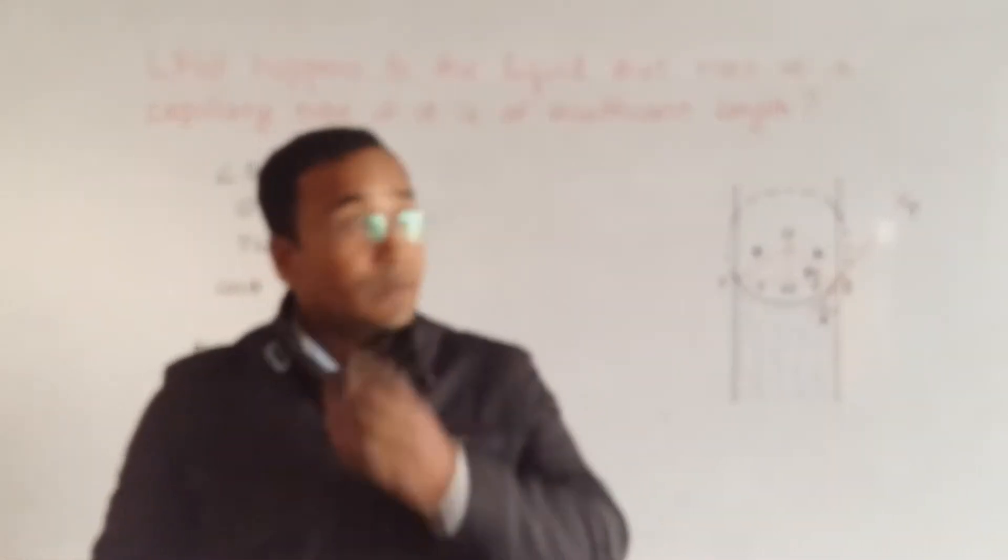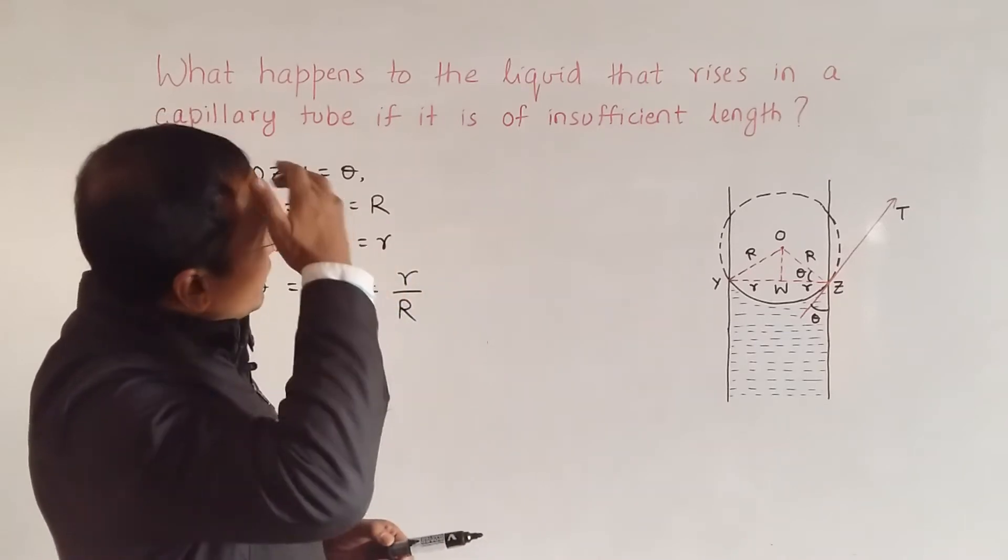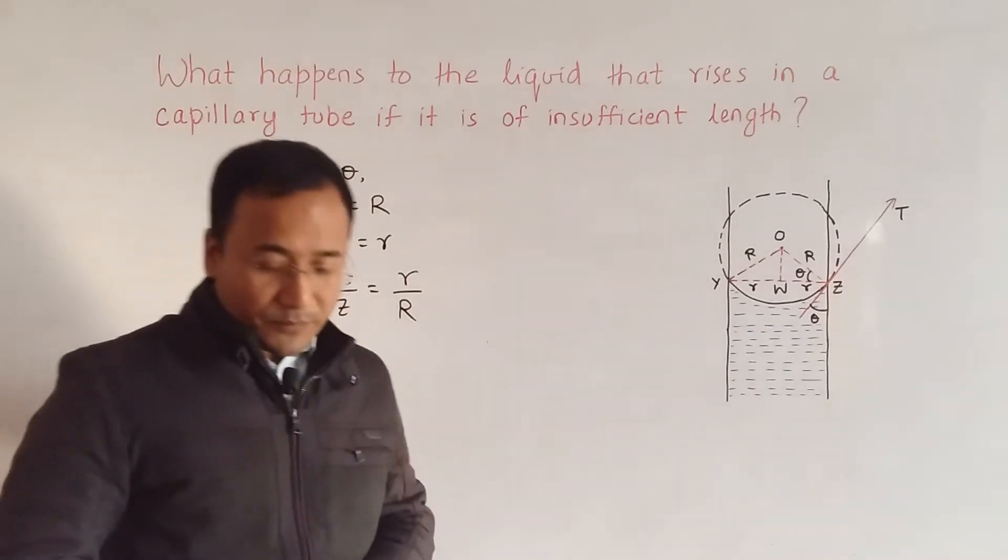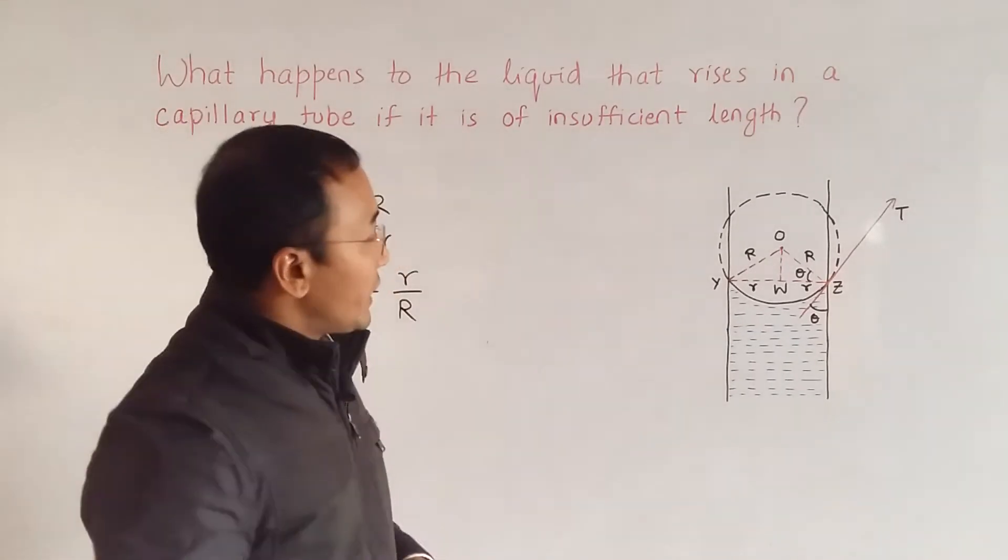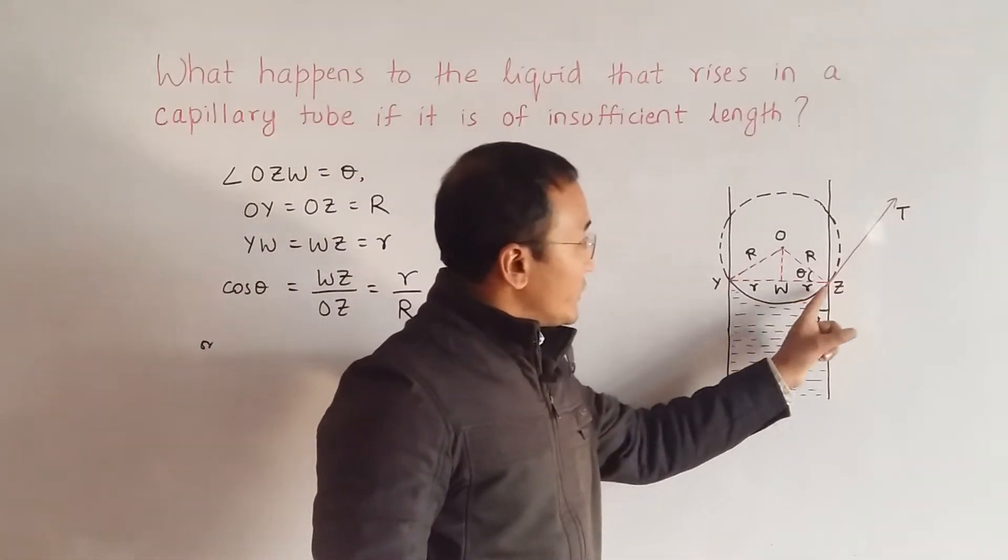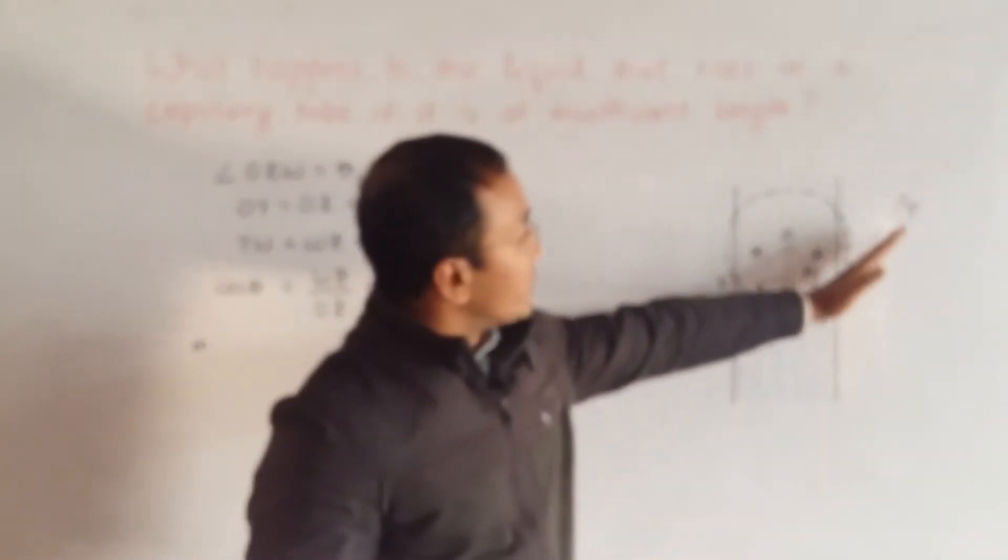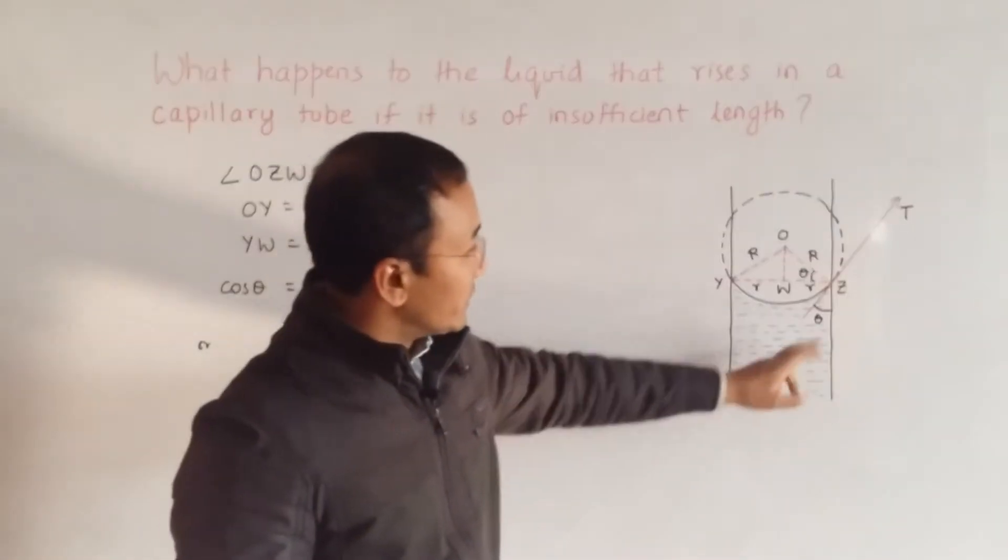The question for today is what happens to the liquid that rises in a capillary tube if it is of insufficient length. In such case we have to consider the whole figure like this. It shows the curvature of the surface, the concave meniscus that we have dealt with. This shows the direction of the surface tension with the angle of contact theta.